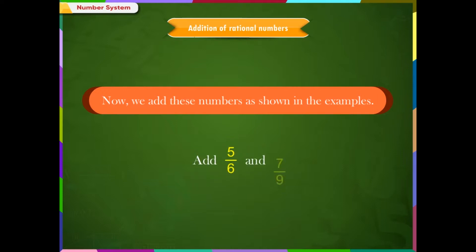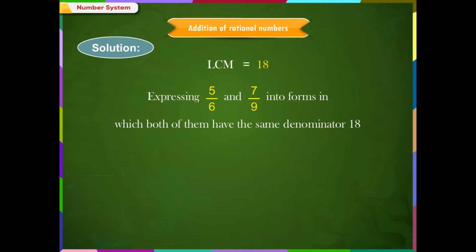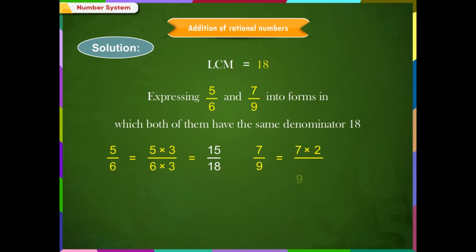Example 1: Add 5/6 and 7/9. The LCM of the denominators 6 and 9 is 18. We express 5/6 and 7/9 with the same denominator 18. We have 5/6 = (5×3)/(6×3) = 15/18, and 7/9 = (7×2)/(9×2) = 14/18. Therefore, 5/6 + 7/9 = 15/18 + 14/18 = (15 + 14)/18 = 29/18.